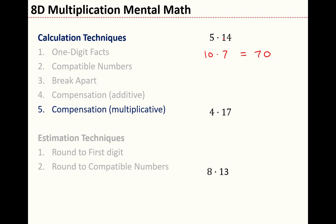This very often happens with multiplicative compensation. One number I will double and the other number I will halve. So doubling the 5 gives me 10, halving the 14 gives me 7, and that's an easier multiplication problem.